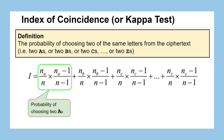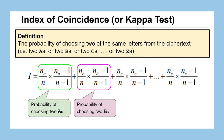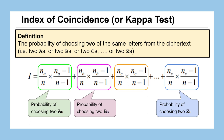The equation uses n_a over n — the number of A's divided by the length of the message — multiplied by n_a minus one over n minus one, since there's one less letter to choose from on the second pick. That gives the probability of choosing two A's. We do the same for B's, C's, all the way to Z's, and then add them all up, since the probability of any one of those 26 outcomes counts toward the total.